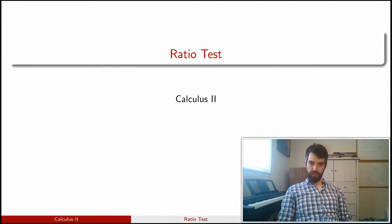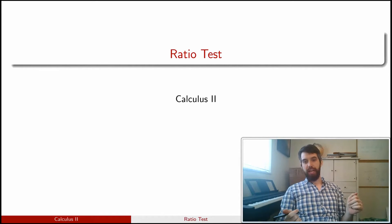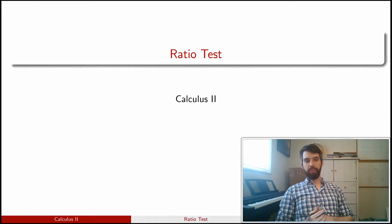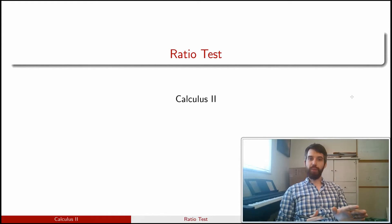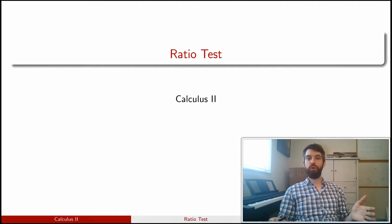In this video, we're going to look at the ratio test, which is a very powerful test for absolute convergence or divergence of a series. We've studied geometric series before — series that have a fixed ratio between all the different terms. But there are many series that, while not being geometric, are in some sense related to a geometric series in the limit. The ratio test applies to this very broad category of series.